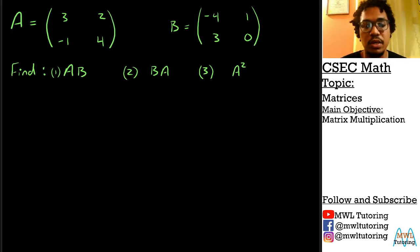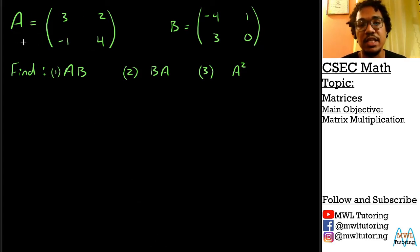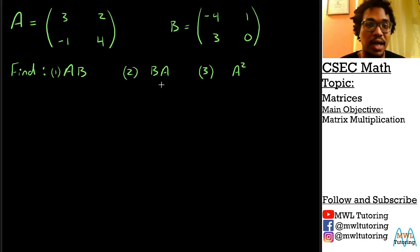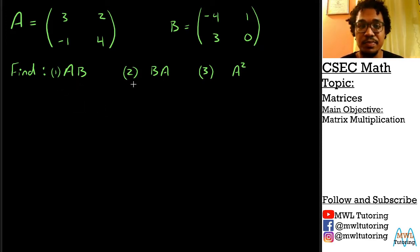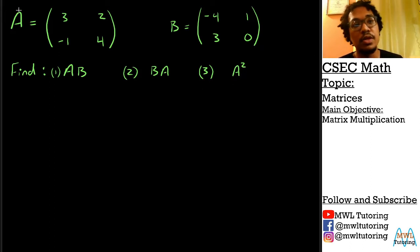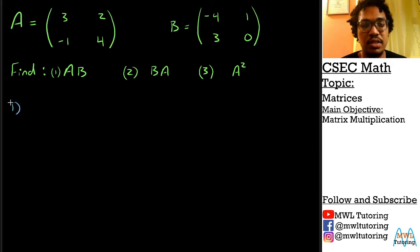We have three questions on the board here. We have two matrices, matrix A and matrix B. They want us to find A multiplied by B, B multiplied by A — which is going to be different, there is a difference — and they want us to find A squared, which is a really tricky question. Let's start with the first one: A multiplied by B.